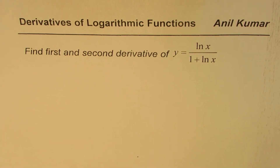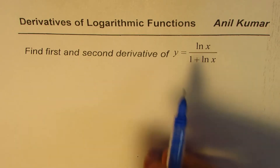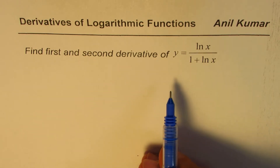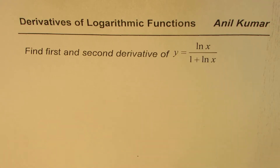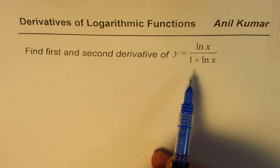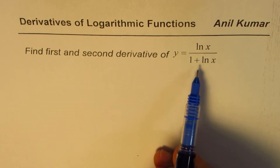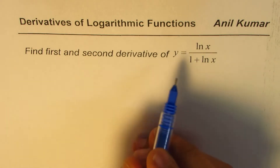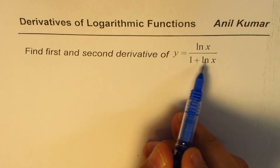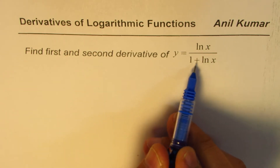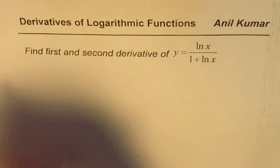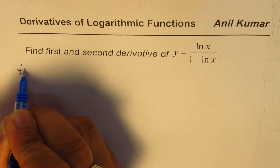I am Adil Kumar and in this video we will try to understand how to find the first and second derivative for a logarithmic function, especially when it is given in quotient form. We are given y equals ln(x) over (1 + ln(x)), and to find the first derivative we can use the quotient rule.